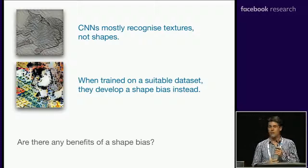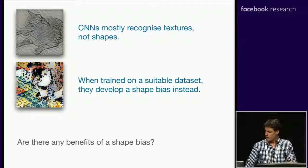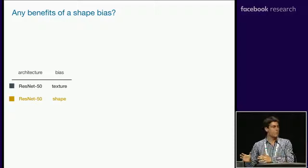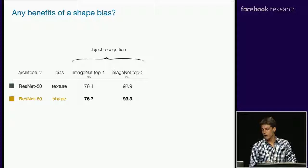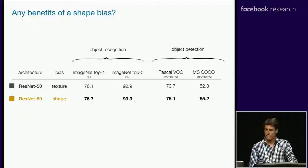For the last part of our work, we looked at whether there are any benefits of having a shape bias. Why do humans perhaps have a shape bias? We compared ResNet-50 trained on ImageNet versus trained on Stylized ImageNet — texture bias versus shape bias. We can see that for ImageNet object recognition, we get slightly improved performance just by including Stylized ImageNet in the training data. We also get quite a bit of a boost on object detection datasets such as Pascal VOC and MS COCO. Having a shape bias really seems to be helpful in terms of how well the features transfer to object detection.